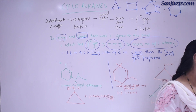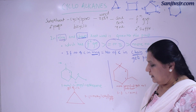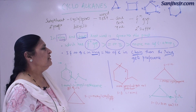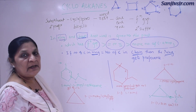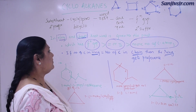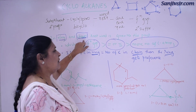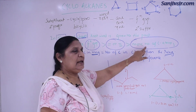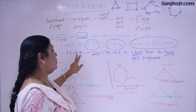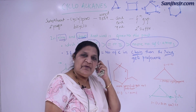Continuing with examples: if a cyclic structure is present, and on the cyclic structure there is a substitution chain, then between cyclic and chain, we decide the root name in this manner. If both have the same number of carbon atoms, then the ring structure gets preference.